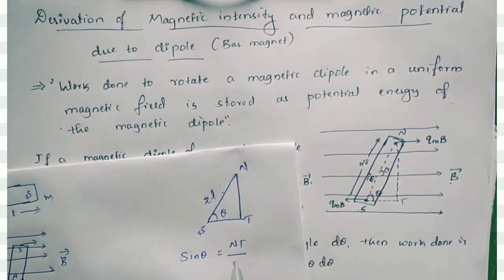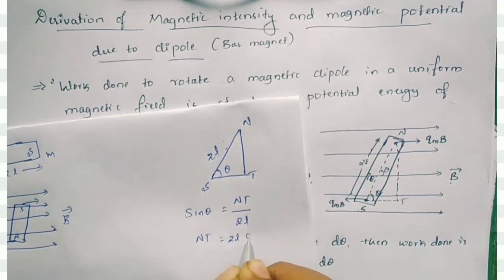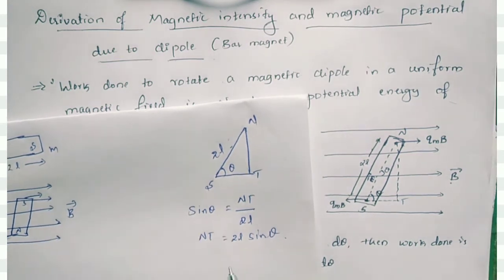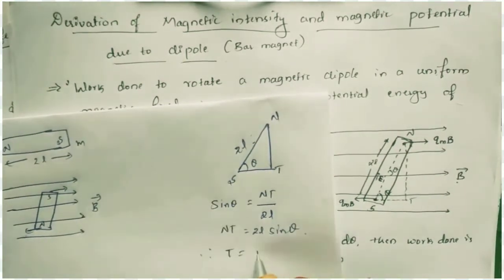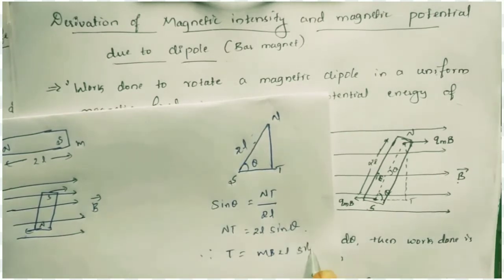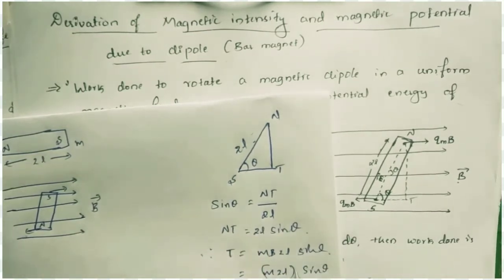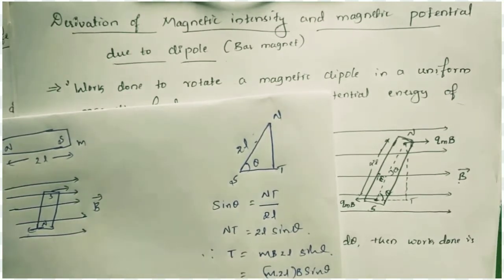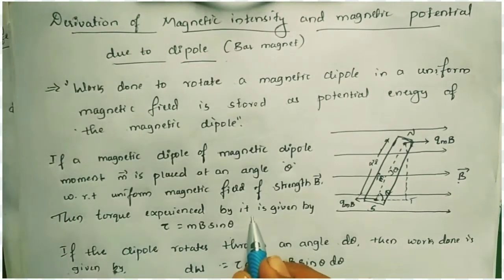The hypotenuse is 2l, so nt = 2l sinθ. Therefore torque equals m × 2l × B sinθ. Taking m × 2l as the total magnetization M, we get torque = MB sinθ. This is the torque expression experienced by the dipole.